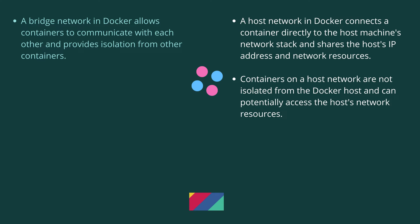A host network in Docker connects a container directly to the host machine's network stack and it shares the host IP address and network resources. This means containers on a host network are not isolated from the Docker host and can potentially access the host network resources.